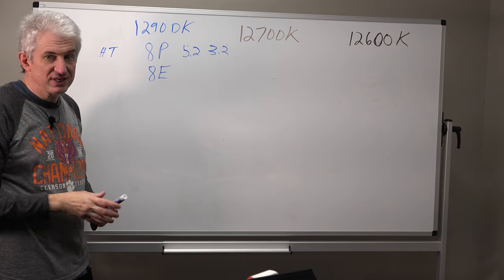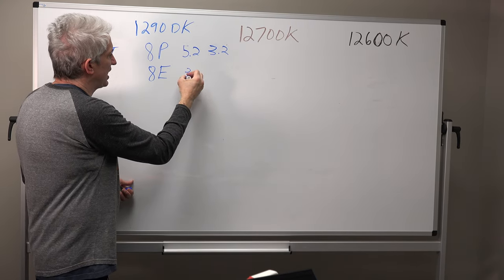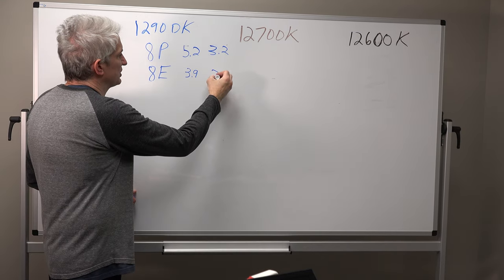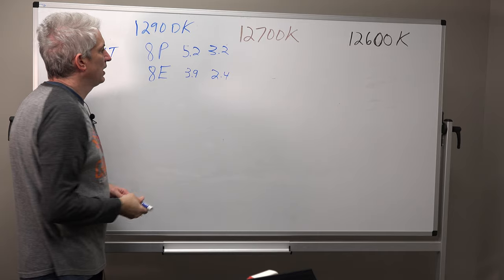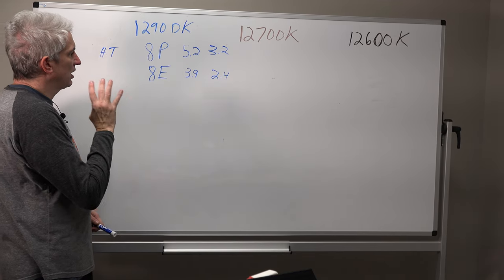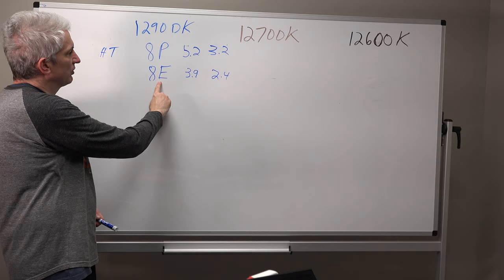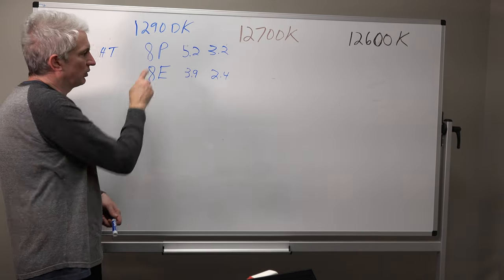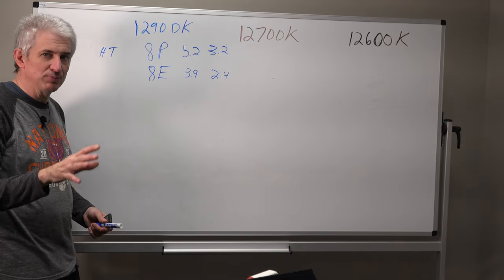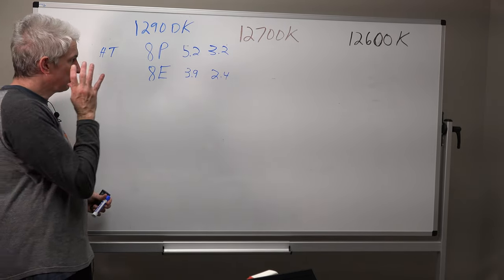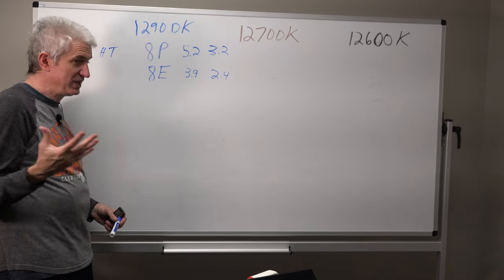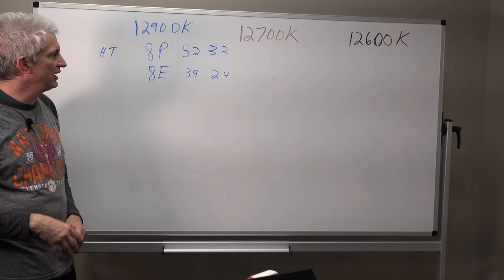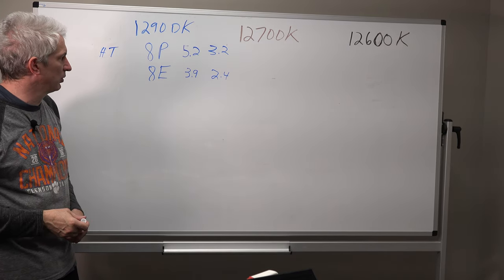Now, the efficiency cores, the E cores, they can go as high as on this processor, 3.9 and their base frequency is 2.4. And in testing, it's been found these are very potent cores. They're just running at a lower clock speed than the P cores. And again, by doing this, it allows Intel or me to be able to cool this chip enough to keep it from overheating and still get really, really good gaming performance.